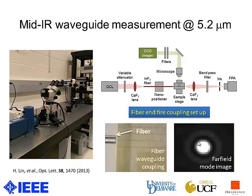The system works as follows. The mid-infrared light from an external cavity quantum cascade laser was coupled using a CaF₂ lens into a mid-infrared fiber. Then we used the fiber to align with the on-chip waveguide and couple the light into it. After that, we used another CaF₂ lens to collect the output light and image it into a mid-infrared camera. Through integrating the photocount of the optical mode, we can get the transmitted intensity of our device.